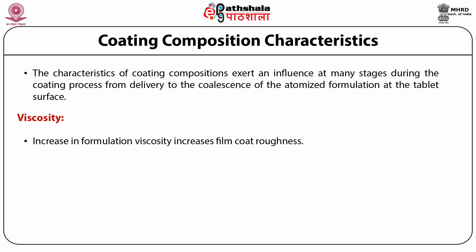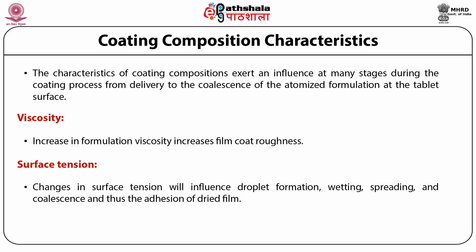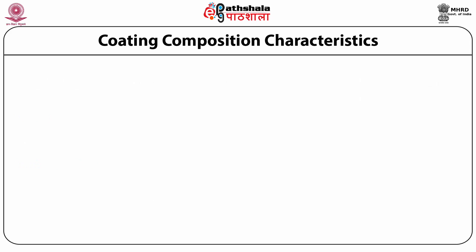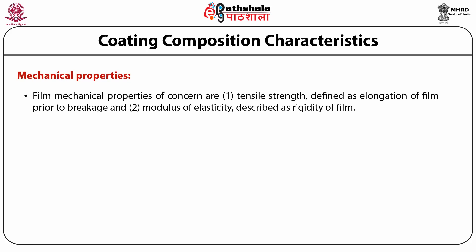The second factor is surface tension. Changes in surface tension will influence droplet formation, wetting, spreading, and coalescence, and thus the adhesion of the dried film. Any reduction in surface tension would favor droplet formation and spreading on the tablet surface. The third property is mechanical properties of the film. Film mechanical properties of concern are tensile strength, defined as elongation of film prior to breakage, and modulus of elasticity, described as rigidity of film. Any increase in molecular weight of the polymer increases the strength of the film and makes it more rigid.